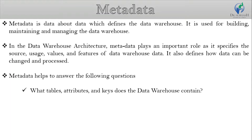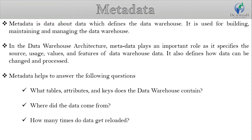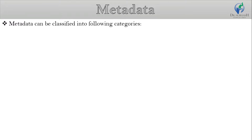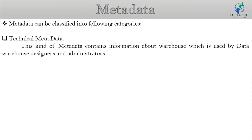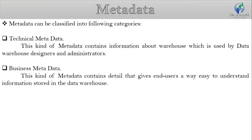Metadata helps to answer the following questions: What tables, attributes, and keys does the data warehouse contain? Where did the data come from? How many times does data get reloaded? What transformations were applied during cleaning? Metadata can be classified into two categories. The first is technical metadata, which contains information about the data warehouse used by data warehouse designers and administrators. The second is business metadata, which contains details that give end users an easy way to understand information stored in the data warehouse.